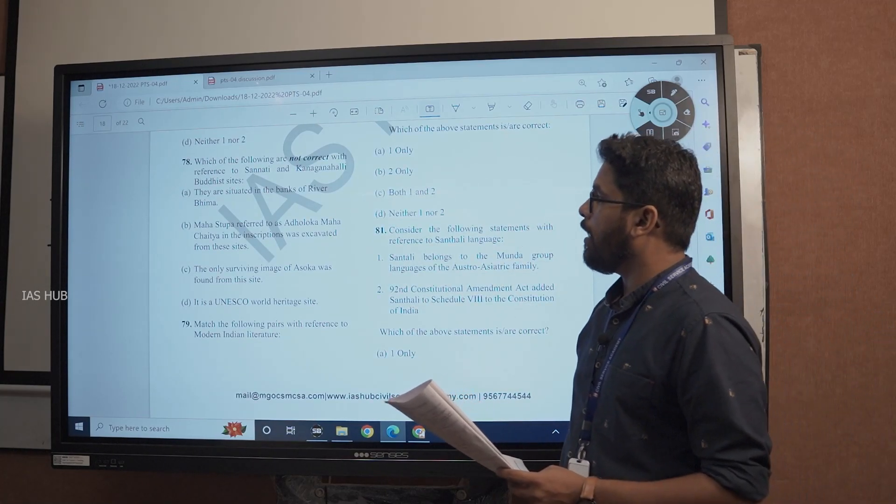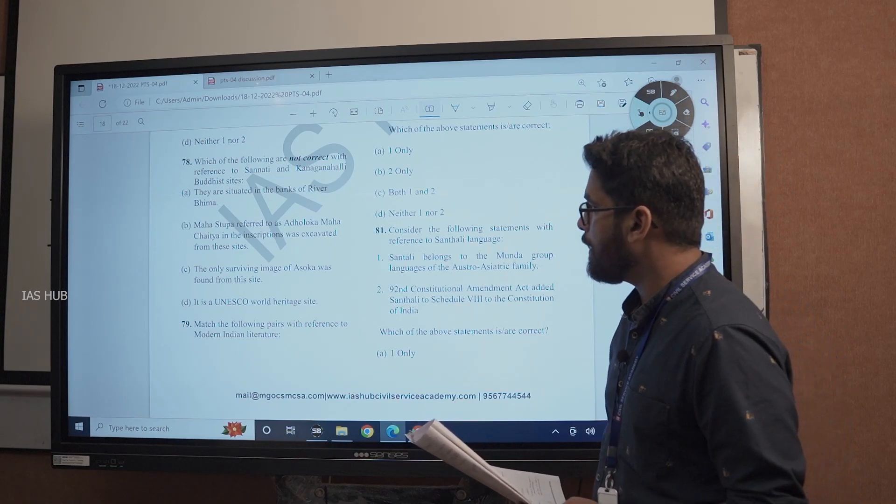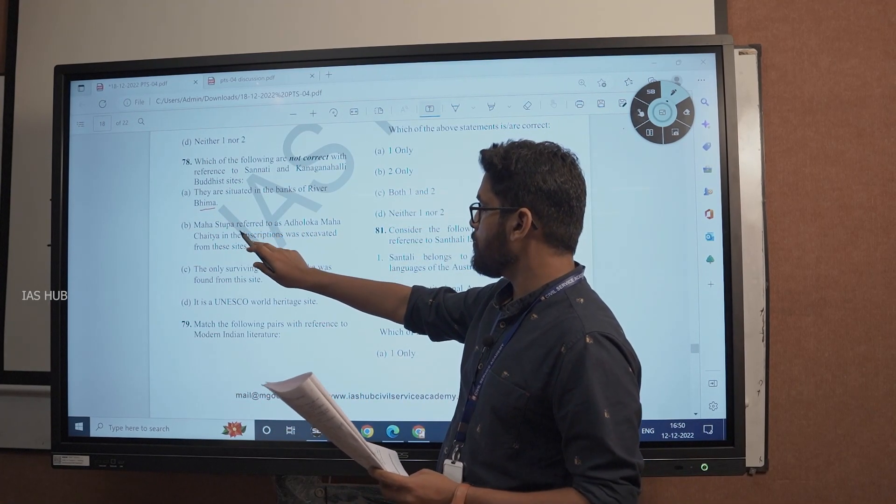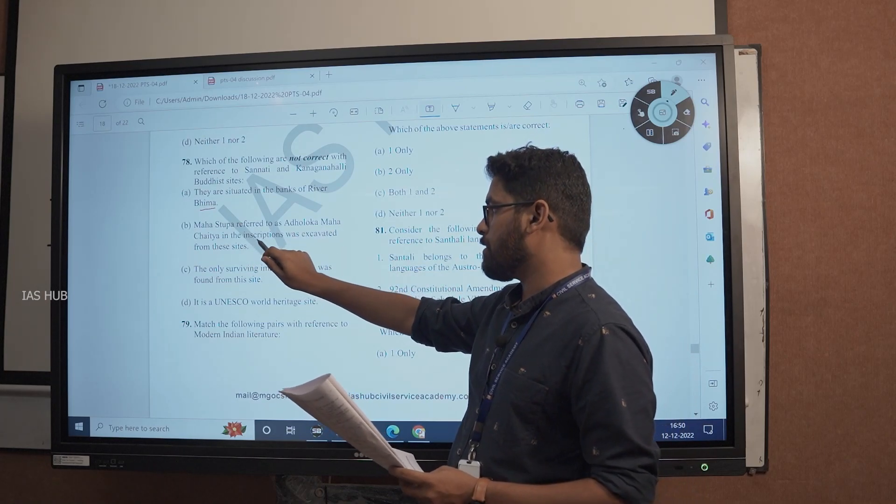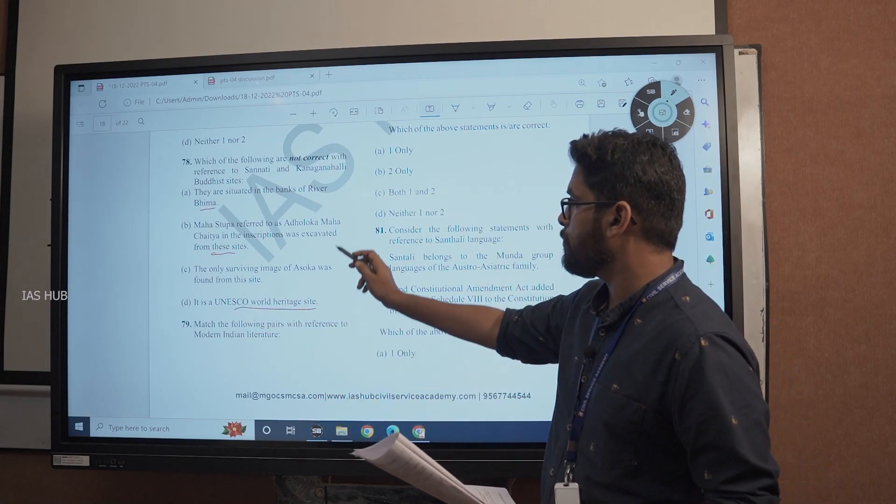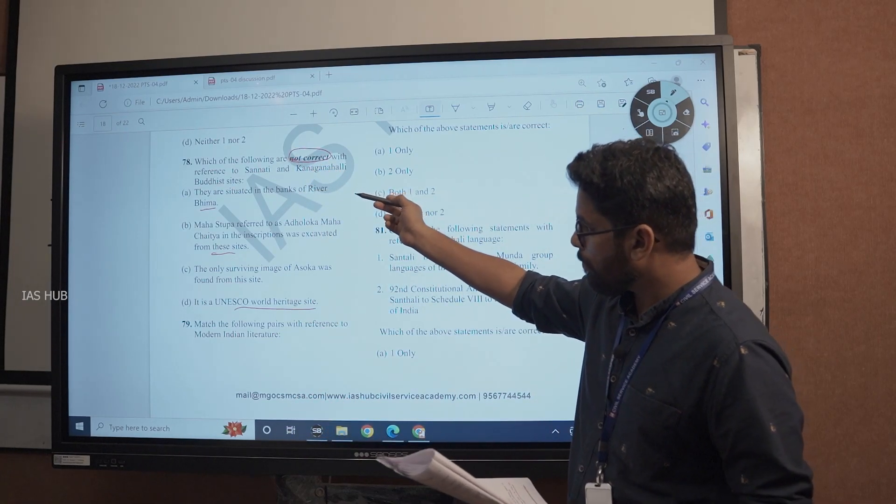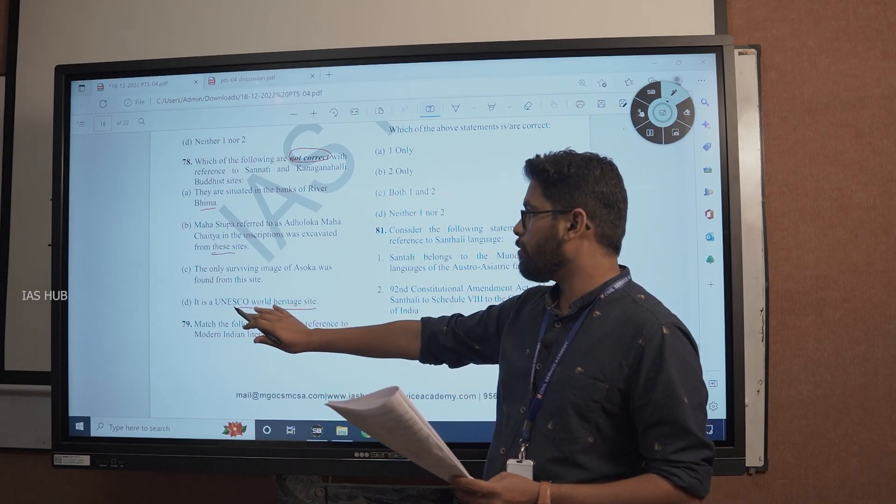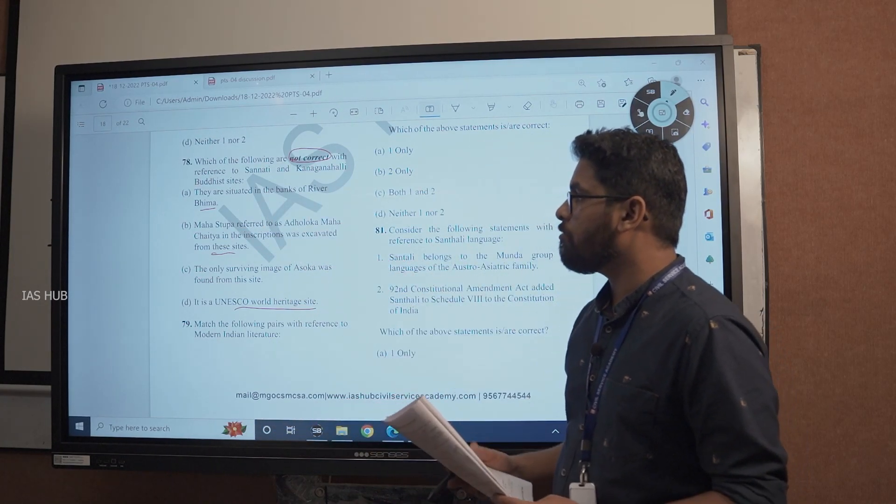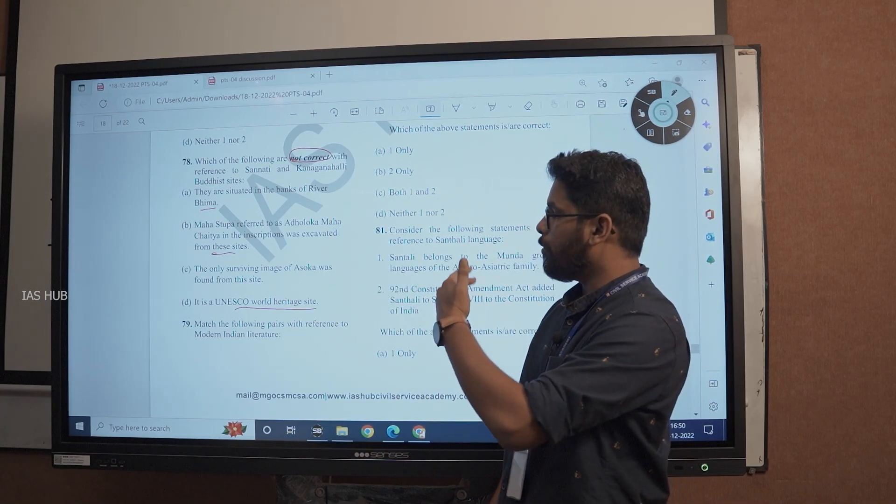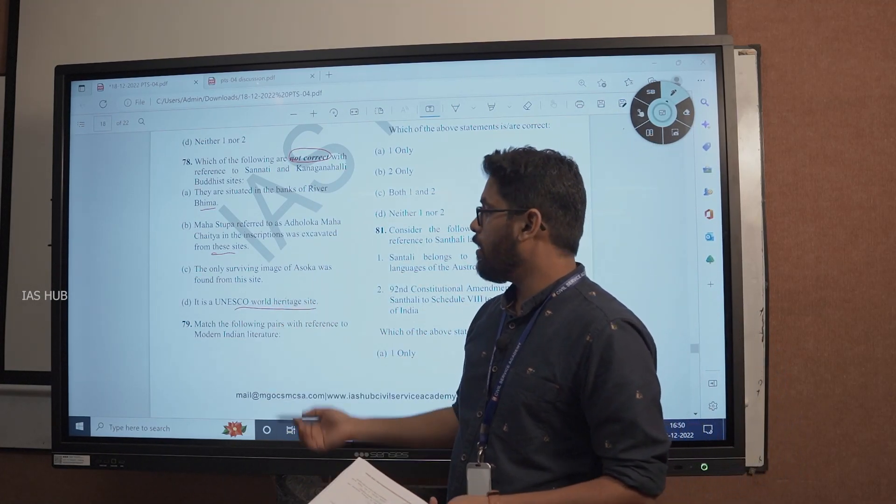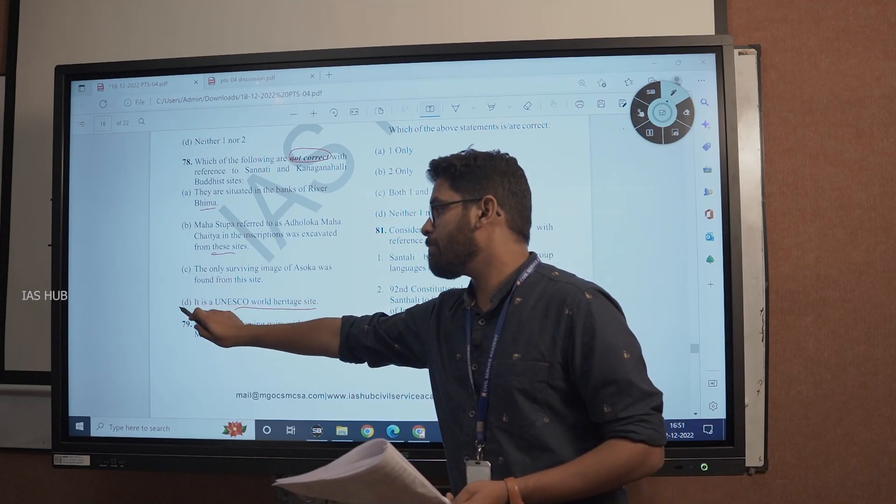Question number 78. Which of the following are not correct with reference to Sarnathi and Kangana Halli Buddhist sites? They are situated on the banks of river Bhima. Maha Stupa referred to as Adho Loga Maha Chaitya in inscriptions was excavated from these sites. The only surviving image of Ashoka was from this site. It is the UNESCO World Heritage Site. All of these things are factual. If you know that it is not a World Heritage Site, the question is simple for you. Answer is D.